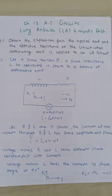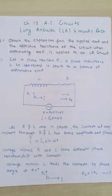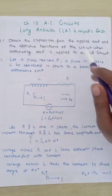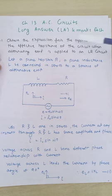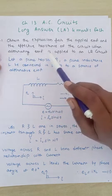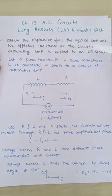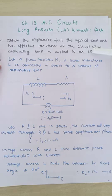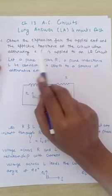This is the solution video for Maharashtra Board question bank, Chapter 13: AC Circuits. Here we have long answer type questions carrying four marks. The first question asks to obtain the expression for the applied EMF and the effective resistance of the circuit when alternating EMF is applied to an LR circuit, where L stands for inductance and R stands for resistance.